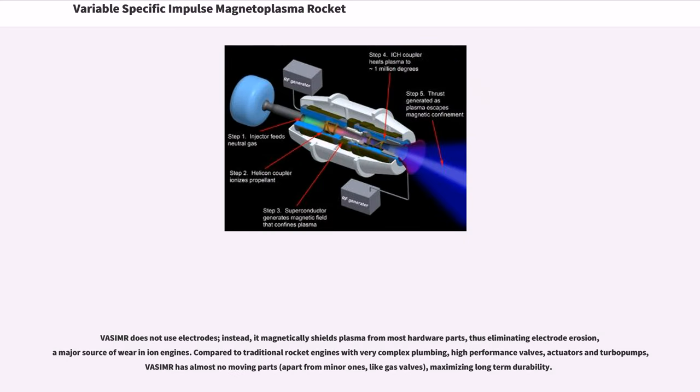VASIMR does not use electrodes; instead, it magnetically shields plasma from most hardware parts, thus eliminating electrode erosion, a major source of wear in ion engines. Compared to traditional rocket engines with very complex plumbing, high-performance valves, actuators and turbo pumps, VASIMR has almost no moving parts, maximizing long-term durability.